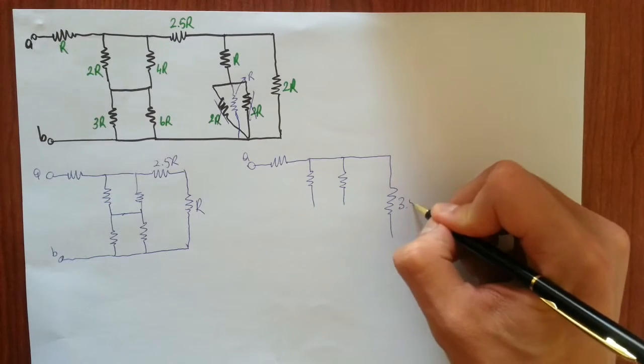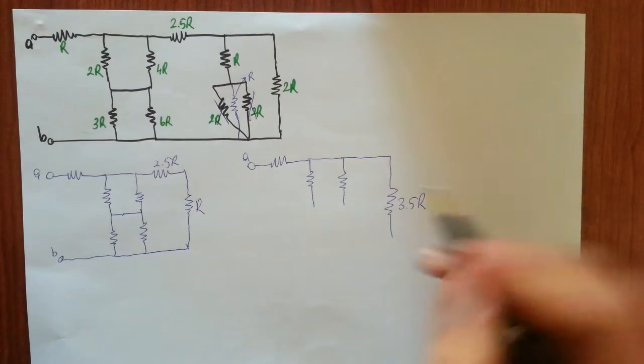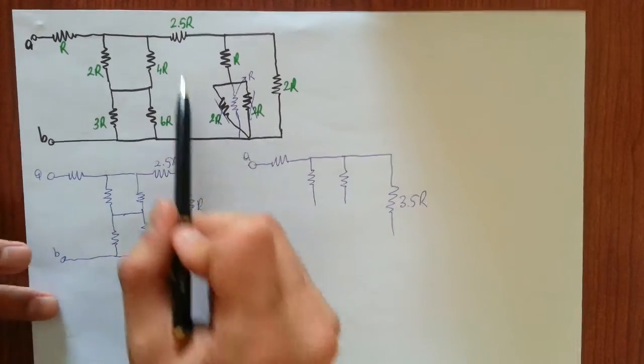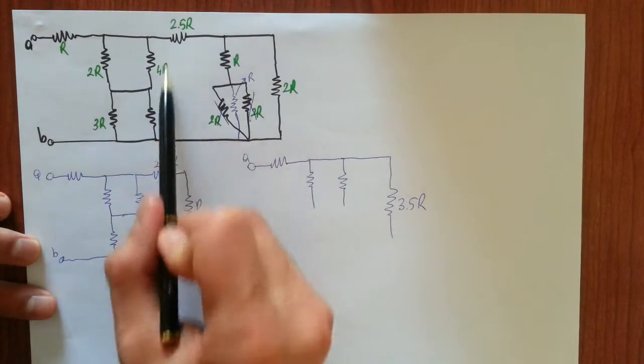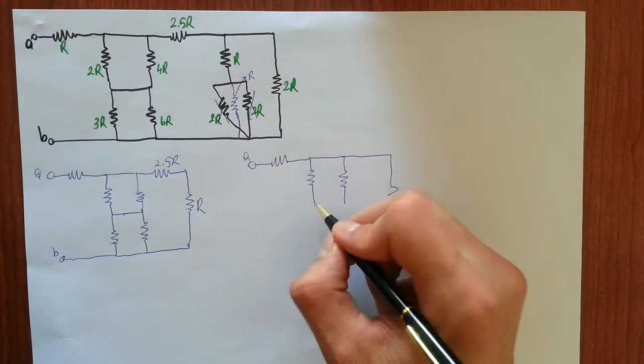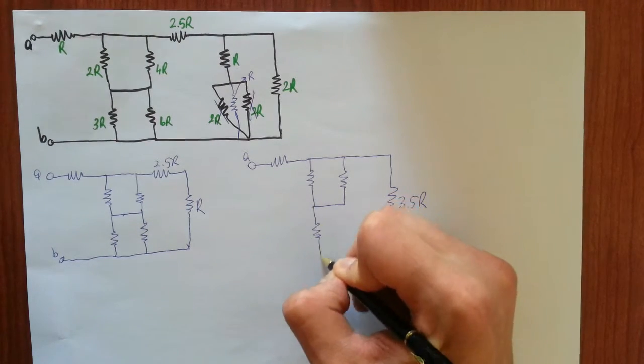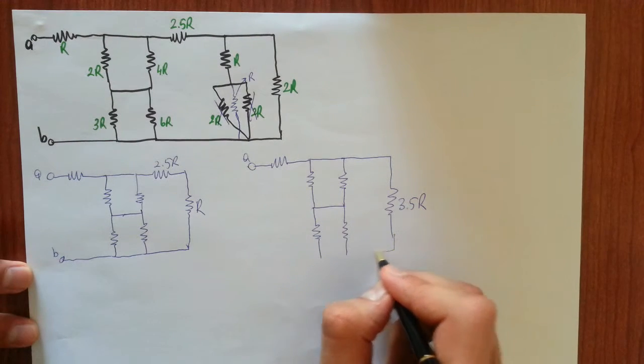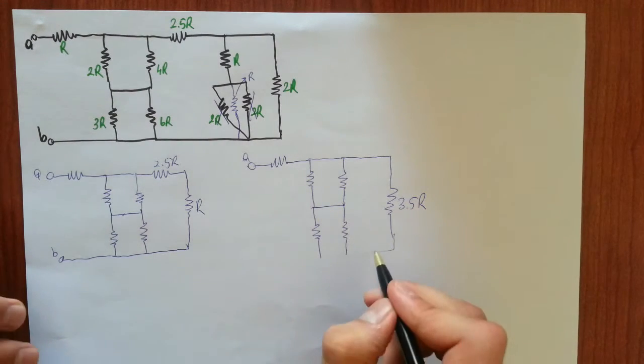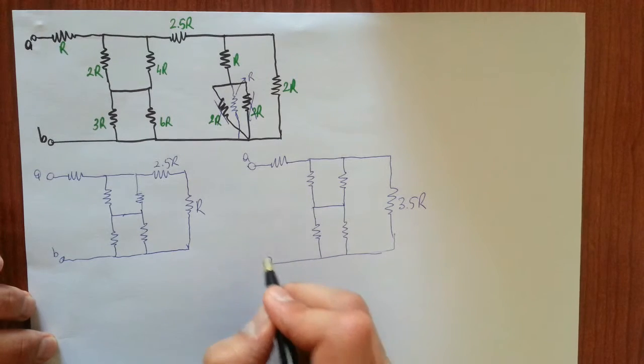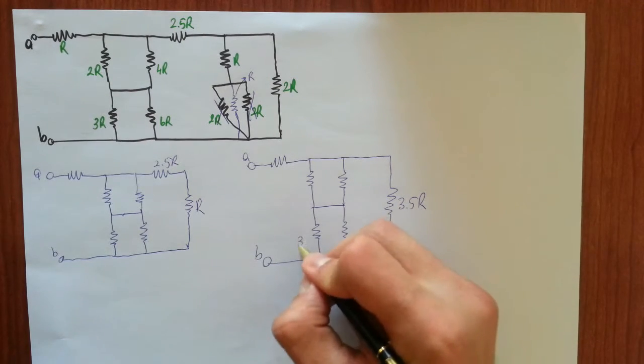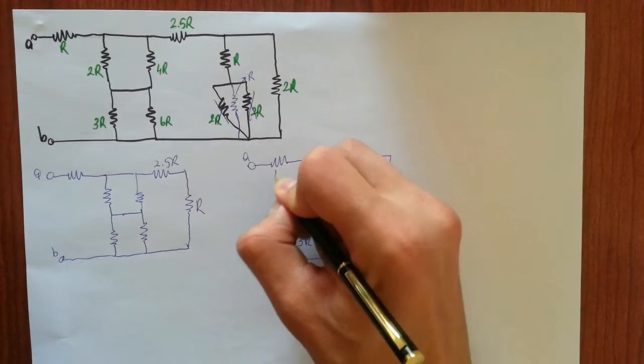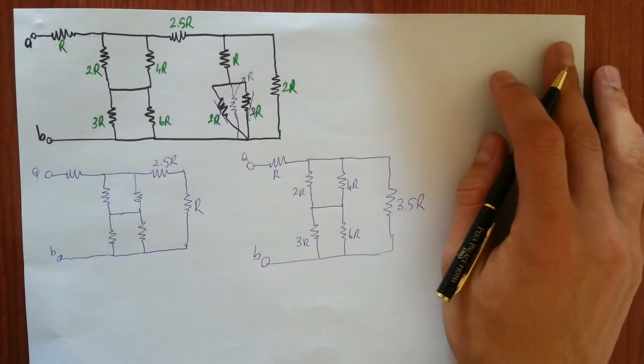This is 2R, 3R, and they connect on the same node. Then will be 6R, 4R, 2R, R.